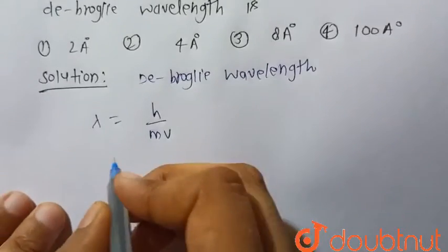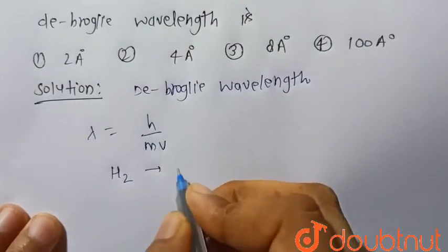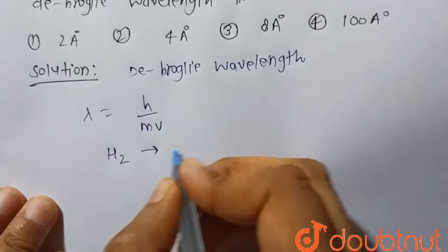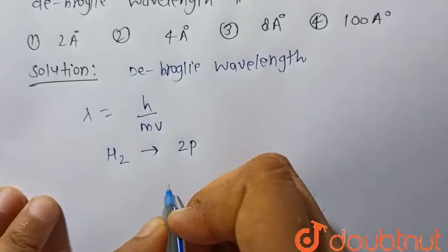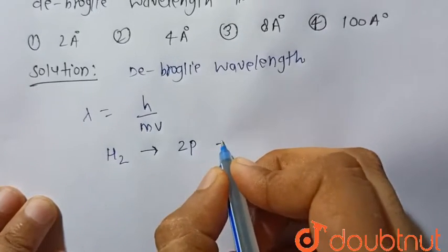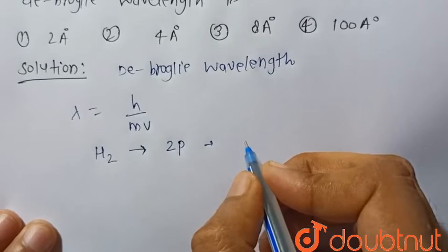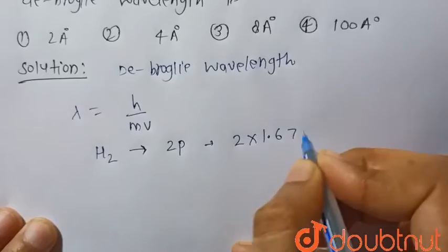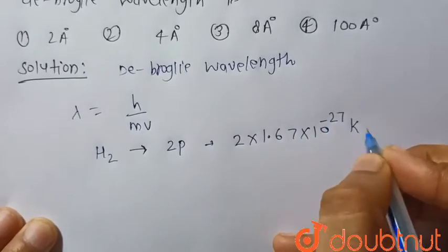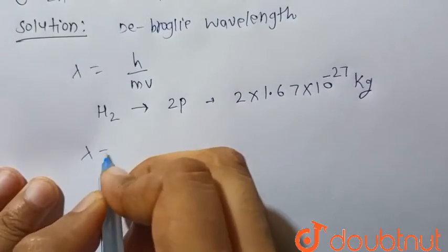It is given that this is the hydrogen molecule H₂. We know that its mass is equal to mass of two protons because it has two protons. Mass of one proton is 1.67 × 10^-27 kg, so mass of two protons will be 2 × 1.67 × 10^-27 kg.